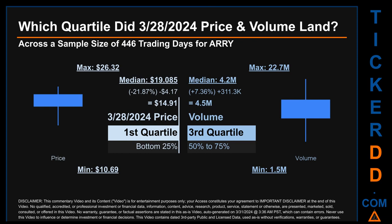Quartiles tell us about the spread of a data set by breaking it into quarters, just like how the median breaks the set in half. Descriptively, ARRY has a median price of $19.085. Therefore, March 28, 2024's price was lower from that middle marker by 21.87%. The day's volume of 4.5 million was more than the median by 7.36%.